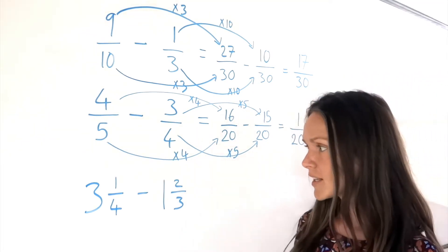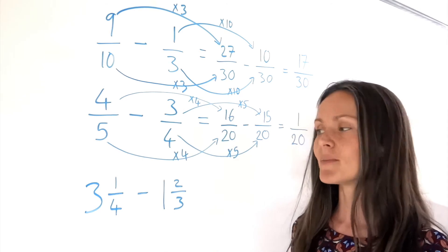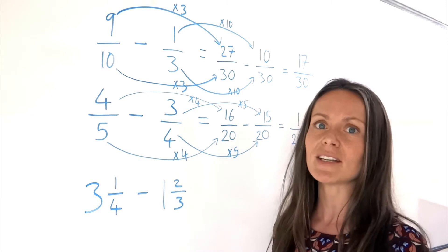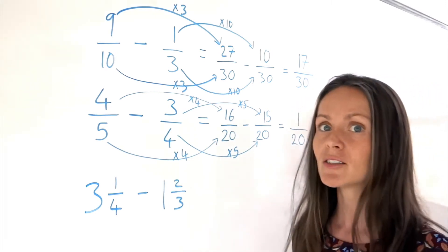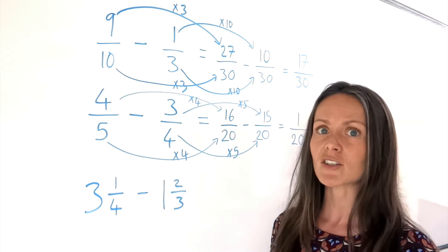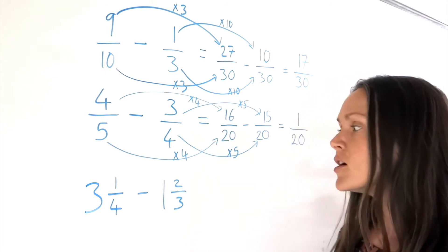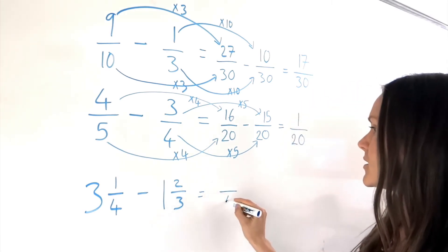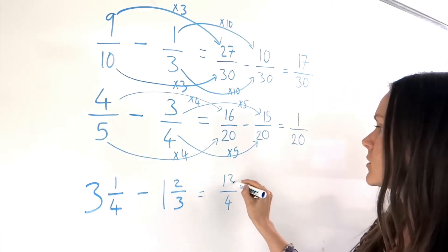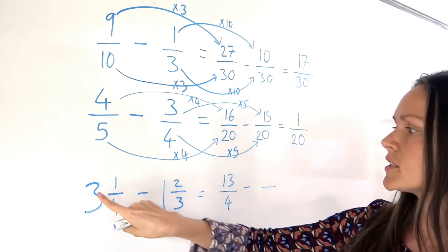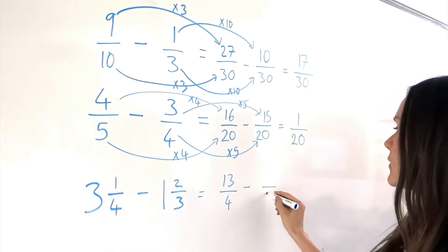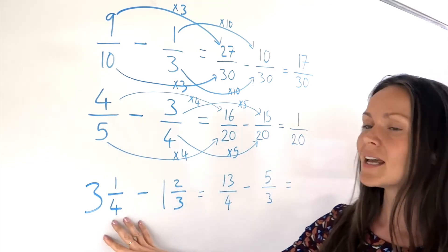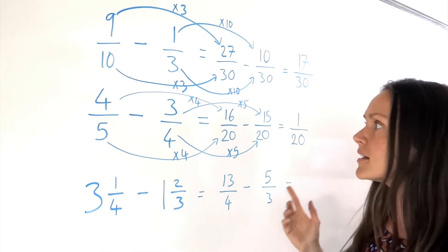Now onto the last one. We've got mixed numbers this time. Just like in my other videos, I recommend you turn these mixed numbers into improper fractions. If you don't know how to do that, I have another video explaining how. So turning these into improper fractions: to get the first one, I did 3 times 4 plus 1, and for the second, 1 times 3 plus 2 is 5. So that's the first step — turn any mixed numbers into improper fractions.